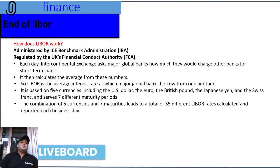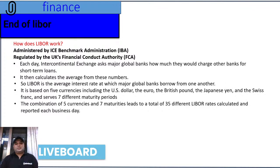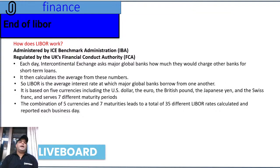How does LIBOR work? First, it is administered by ICE Benchmark Administration, also known as IBA. The regulating authority is the UK's Financial Conduct Authority, or FCA. So the regulatory body is FCA, while the administration is done by IBA — ICE Benchmark Administration.